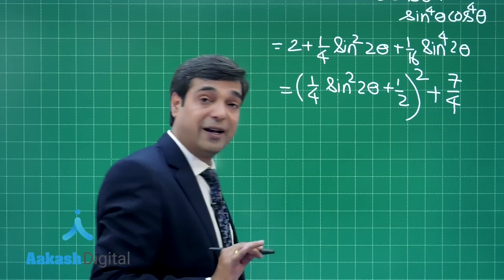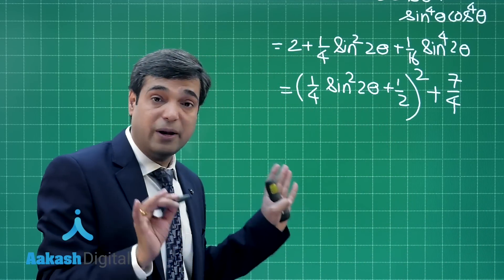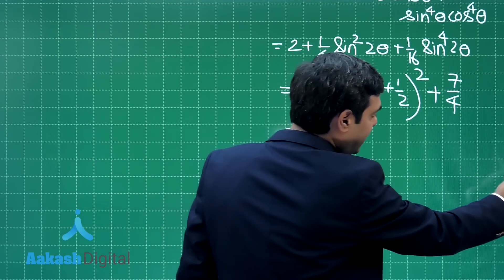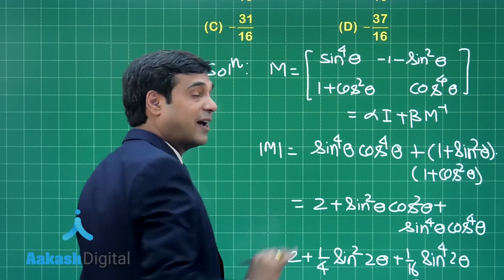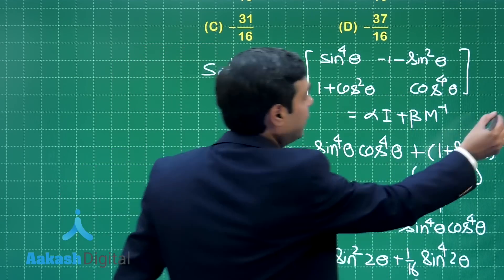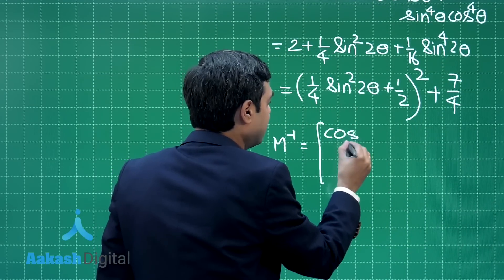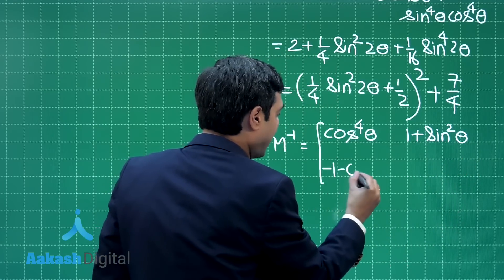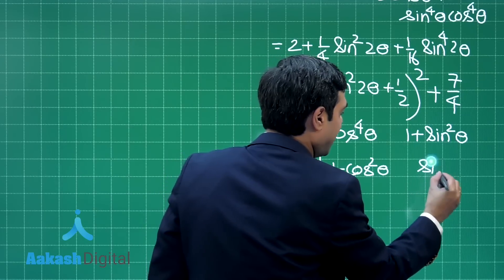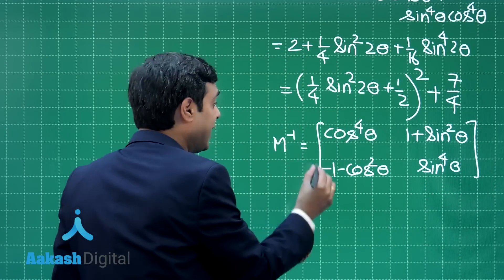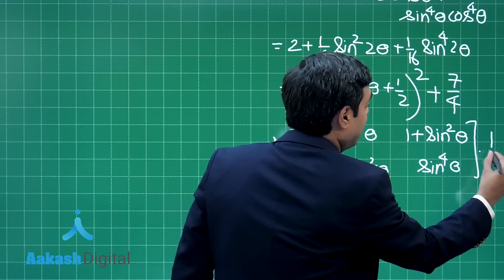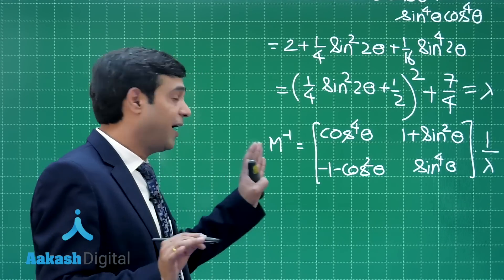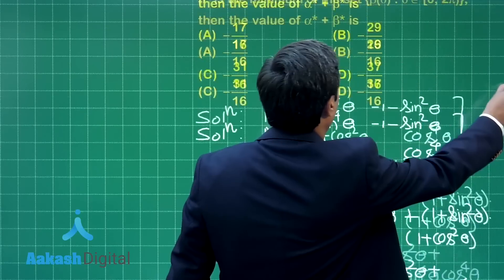The determinant of M is established. M⁻¹ is obtained by interchanging the diagonal elements (cos⁴θ and sin⁴θ) and changing the signs of the off-diagonal elements. So the adjoint M is [[cos⁴θ, 1 + sin²θ], [-1 - cos²θ, sin⁴θ]], and M⁻¹ = (1/λ) · adj(M). This is clear.